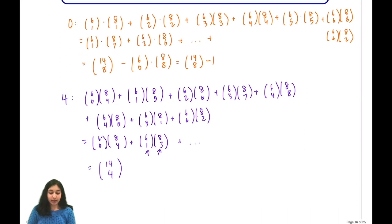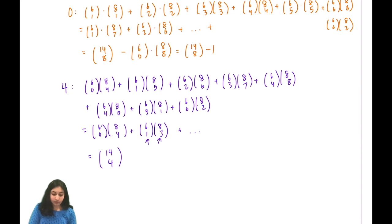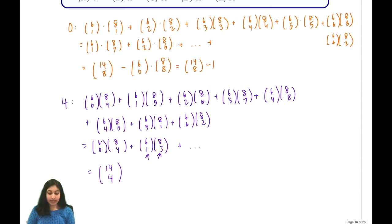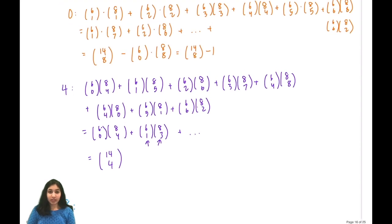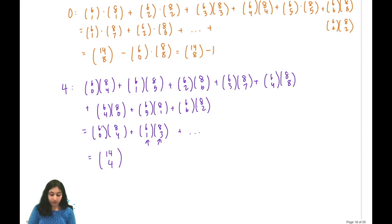Then we look at the case of 8, where the difference between the number of tenors and bases is 8. The only way for this to be possible is if we have all 8 bases and no tenors. So that's 8 choose 8 times 6 choose 0, which is just 1.